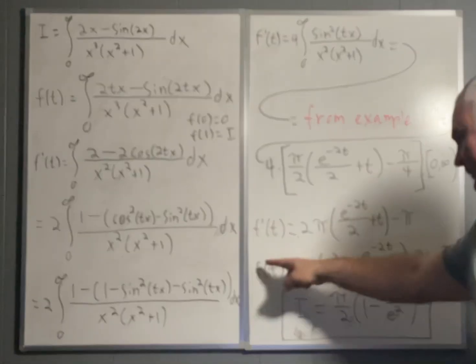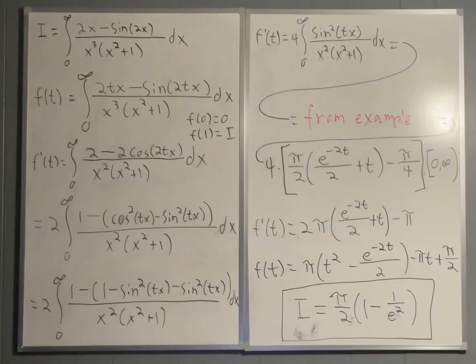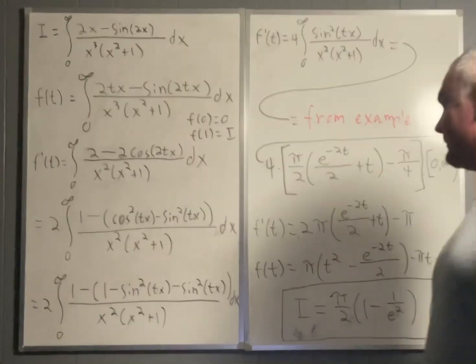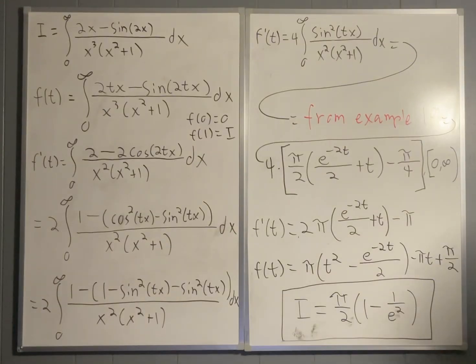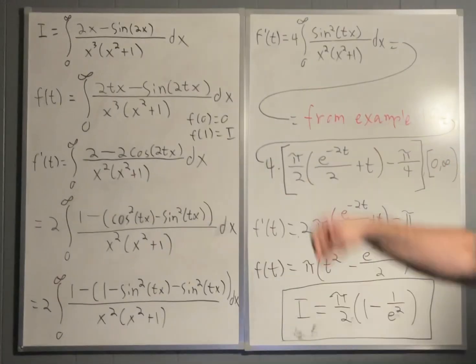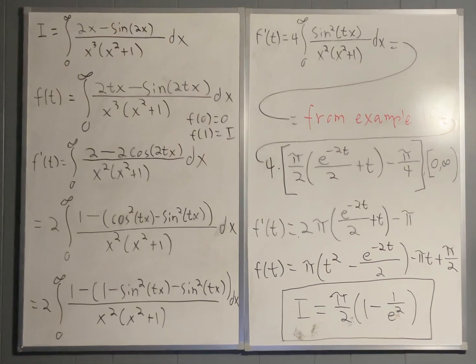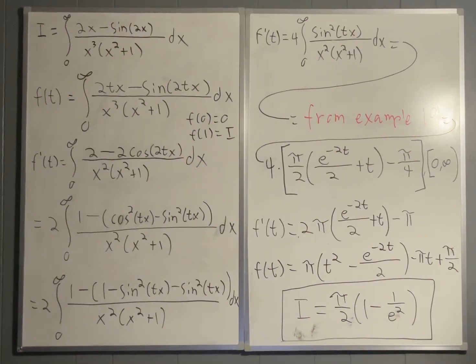Now all we need to do is plug in 1 to find our original integral. And what you do when you get that and do some simplification is that that integral is equal to pi over 2 times 1 minus 1 over e squared.